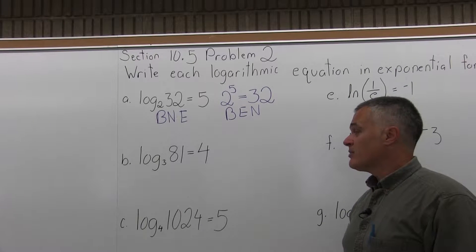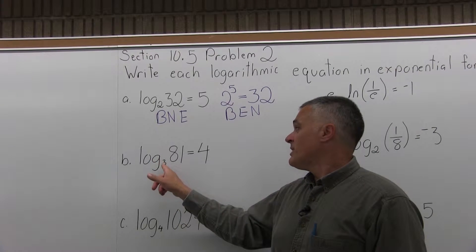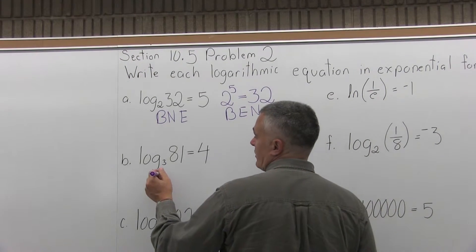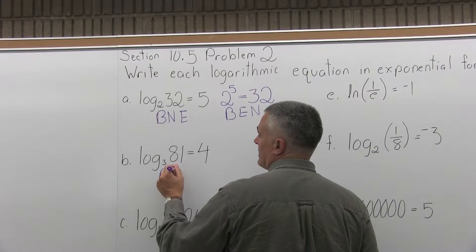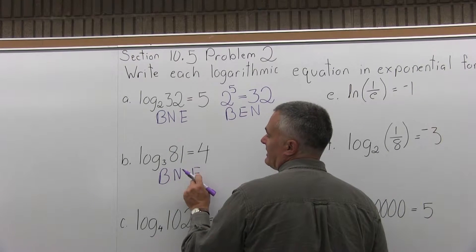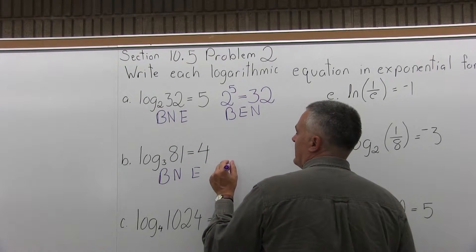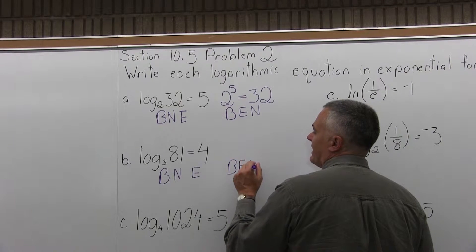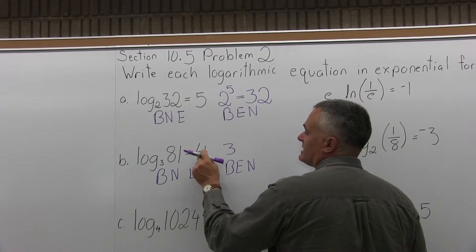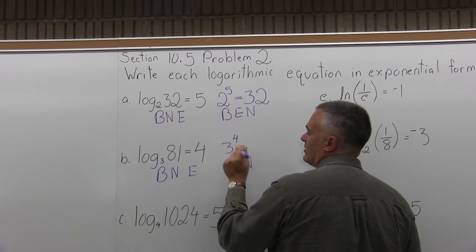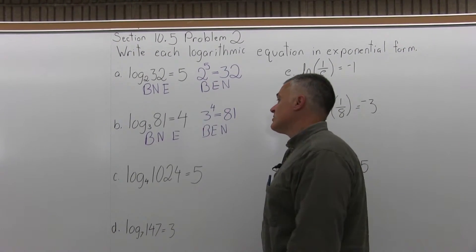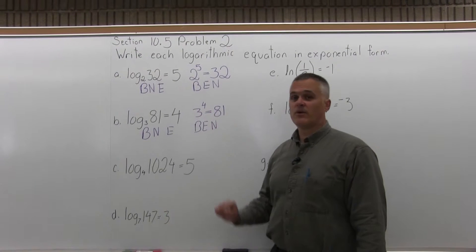Next is part B, the same type of problem. It says write log base 3 of 81 equals 4 in its exponential form. Underneath log base 3 of 81 equals 4, I write Benny — base, number, exponent. The base is 3, the number is 81, and the exponent is 4. Writing BEN for the exponential form: base is 3, exponent is 4, then equals, then the number 81. So log base 3 of 81 equals 4 is the same as writing 3 to the fourth power equals 81.